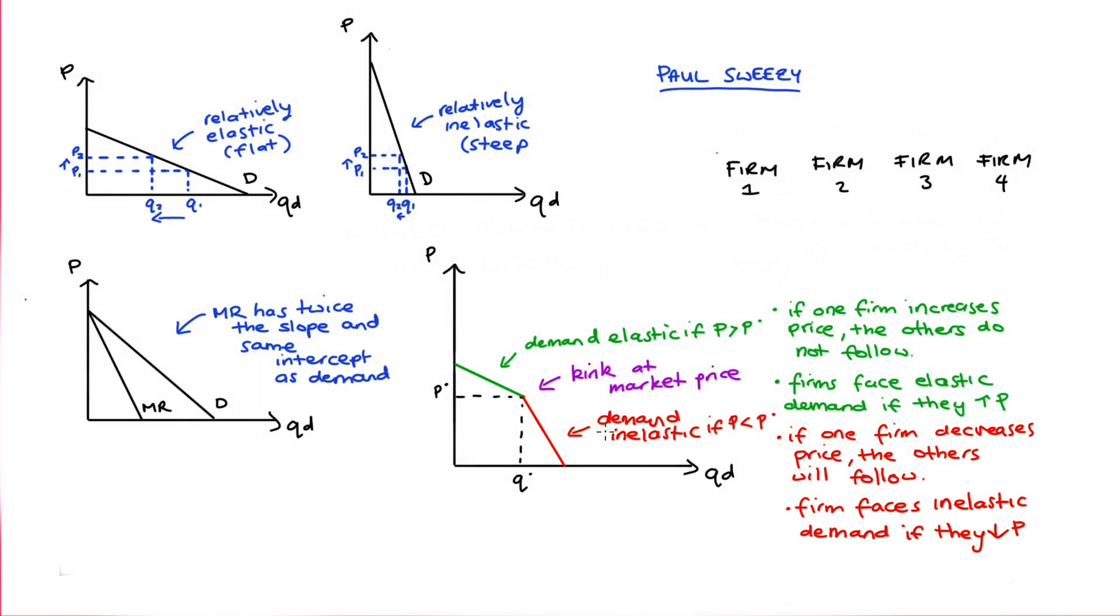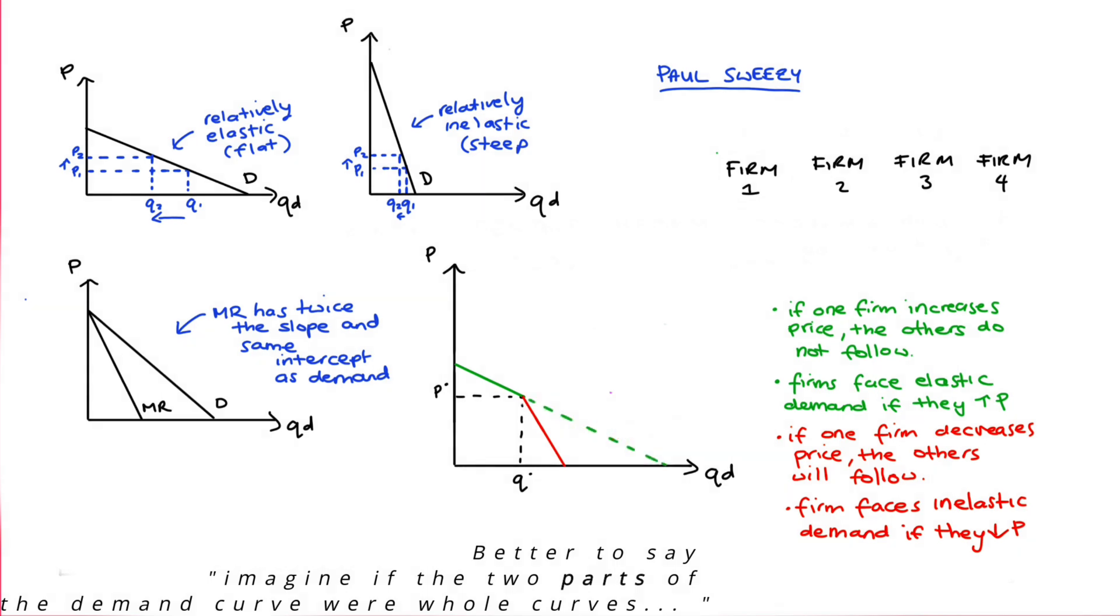Let's look then at what happens to marginal revenue. Let's imagine that these two demand curves were whole. The green one would extend out like this and the associated marginal revenue curve would be like this. It has double the slope and the same intercept as demand. Likewise, our red part, our inelastic demand. If I extended it out, it would be like this. So the associated marginal revenue curve would be like this.